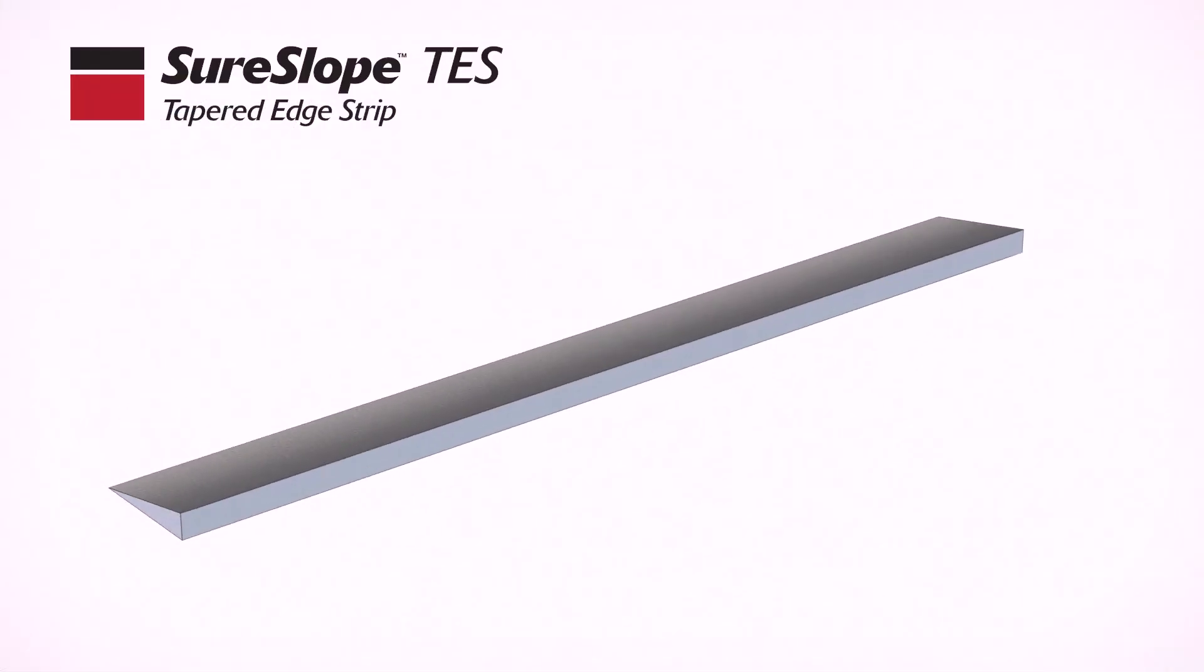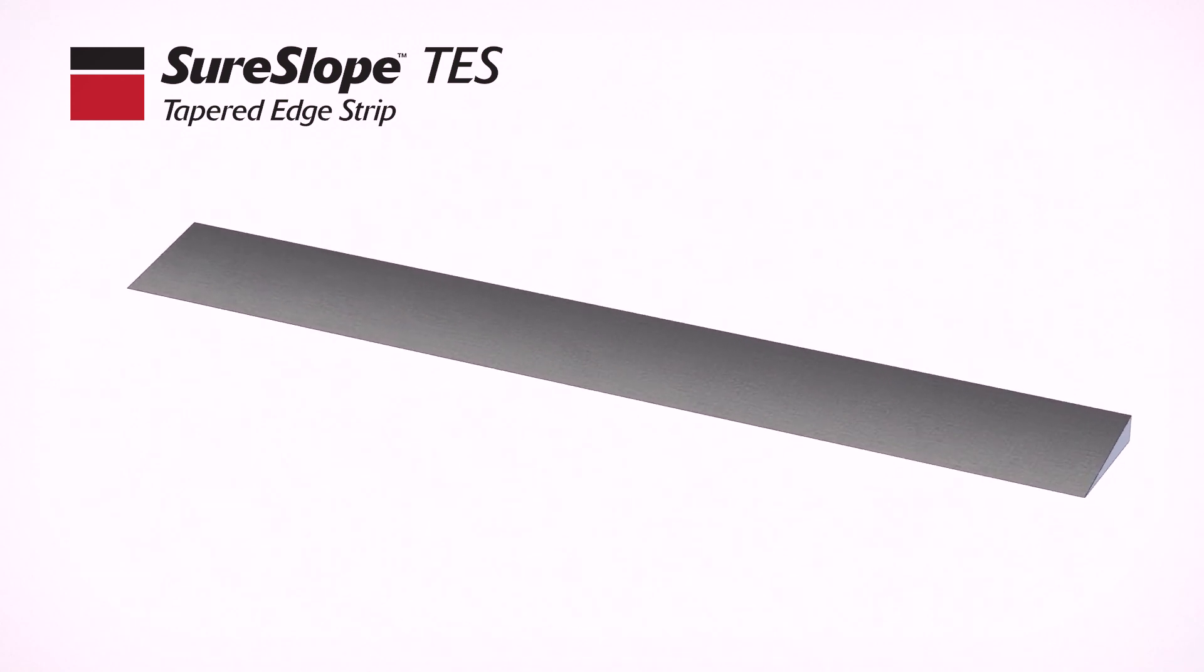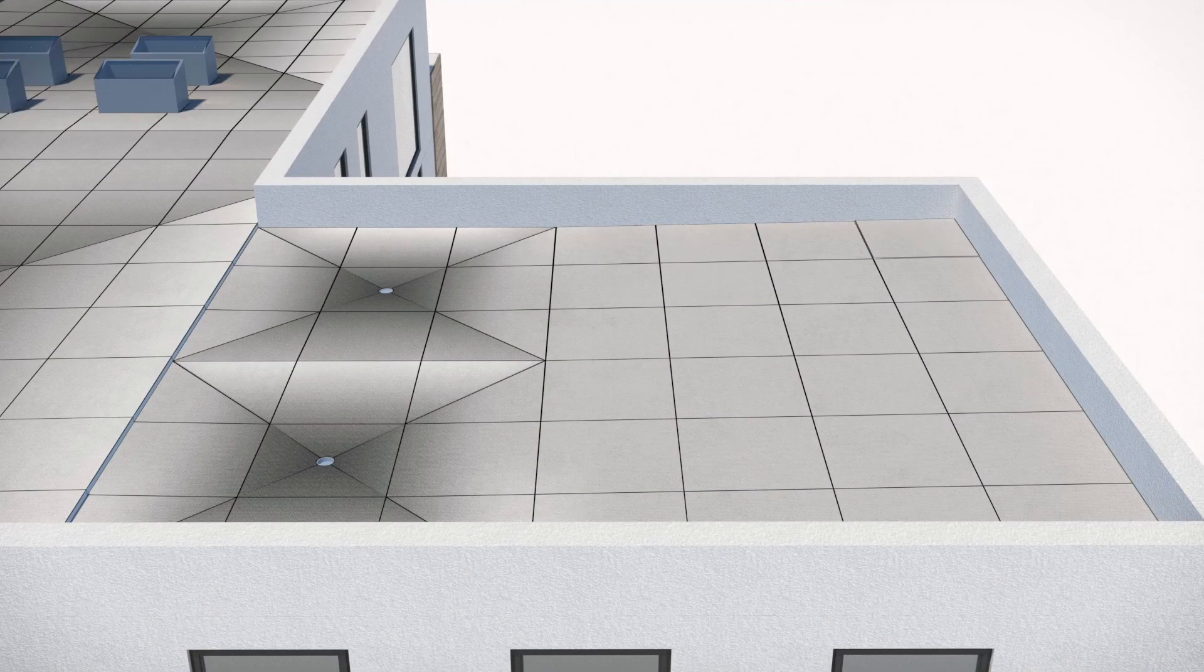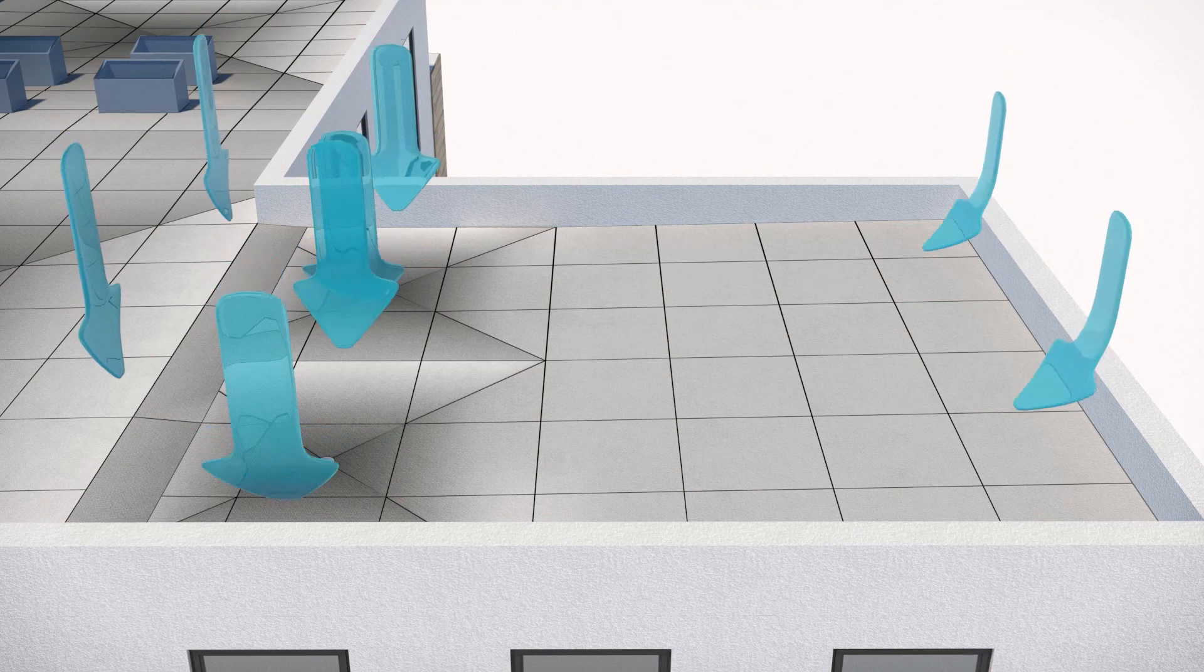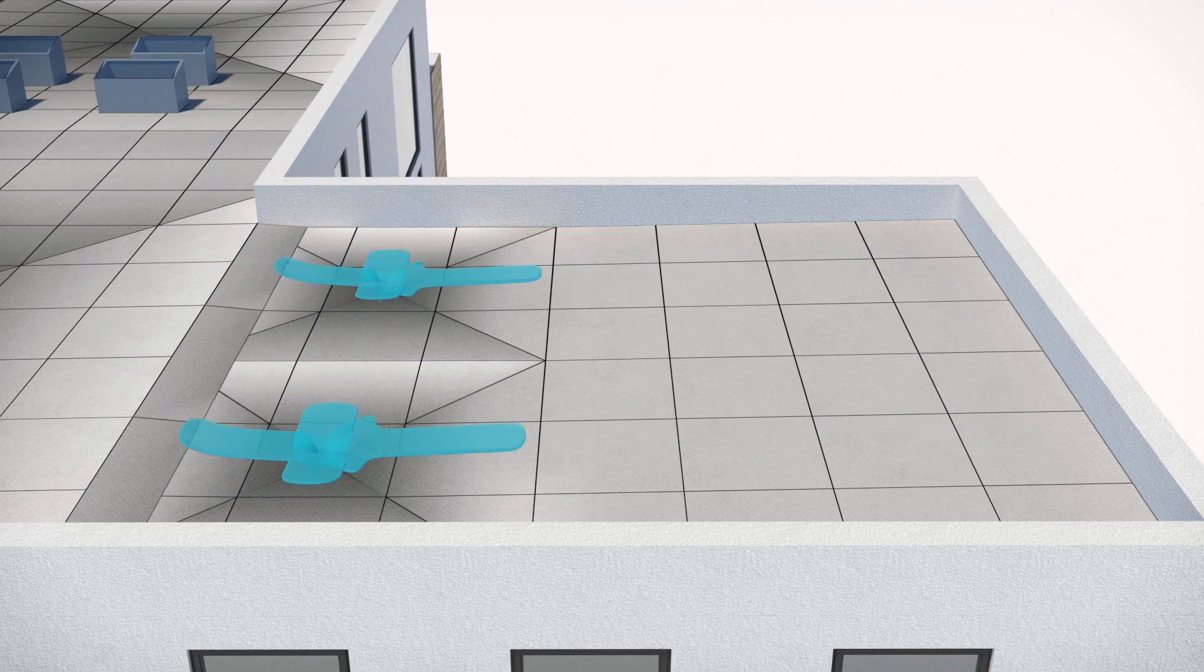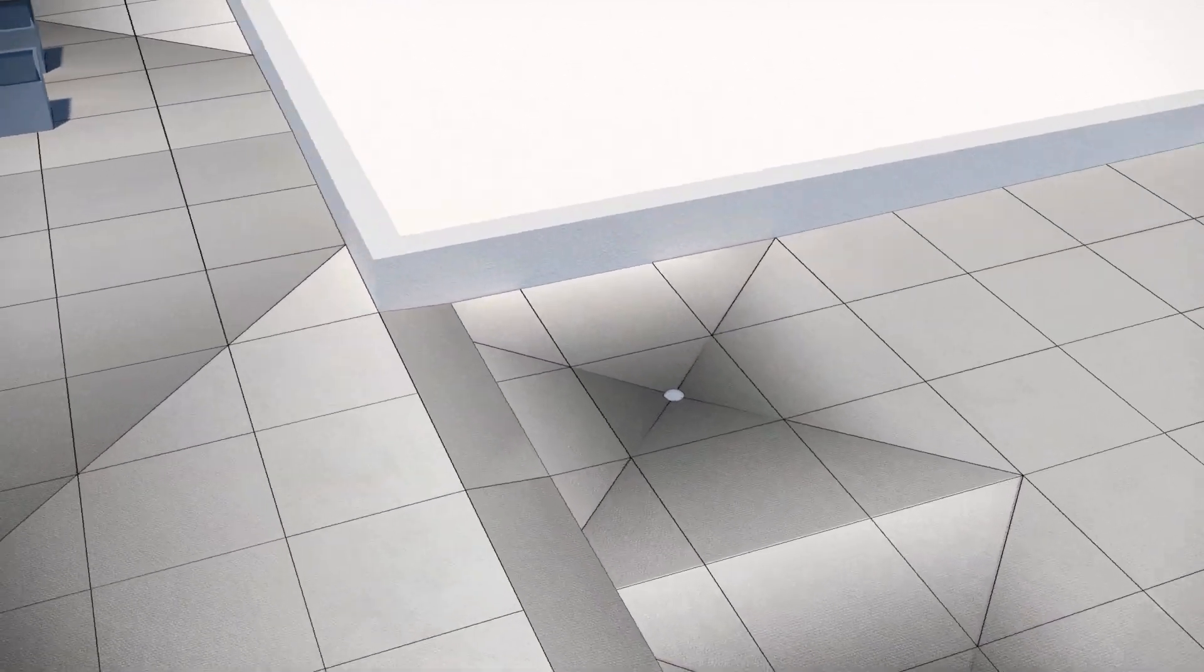The SureSlope tapered edge strips in 12 and 24 inch widths can be used in a variety of applications. Here we are utilizing the 24 inch tapered edge strip to provide a smooth transition between the two tapered areas.